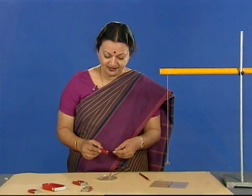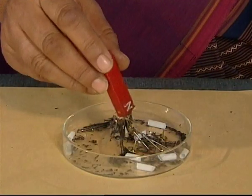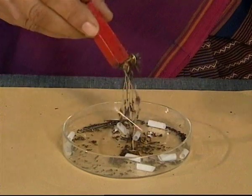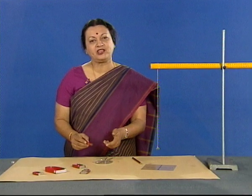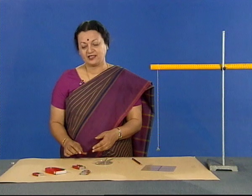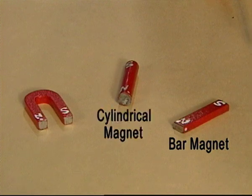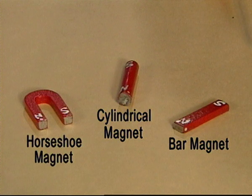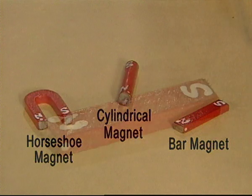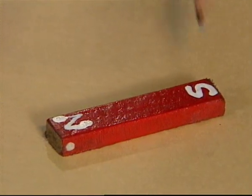We have all heard about magnets and most of us are familiar with one of its most obvious properties — that of attracting materials such as iron. Magnets can be of any shape, any size. Some shapes are like the bar magnet, cylindrical magnet, or even a horseshoe magnet. All magnets have got two poles, a north pole and a south pole.